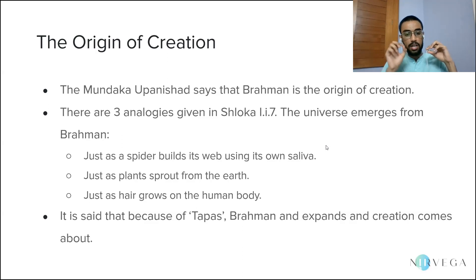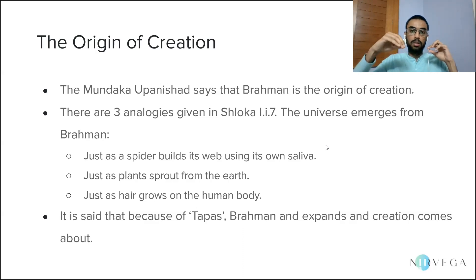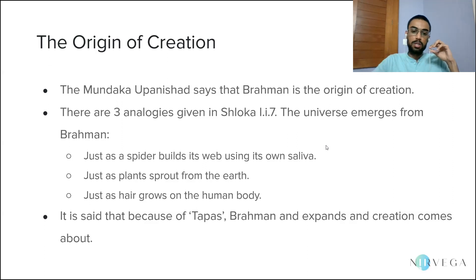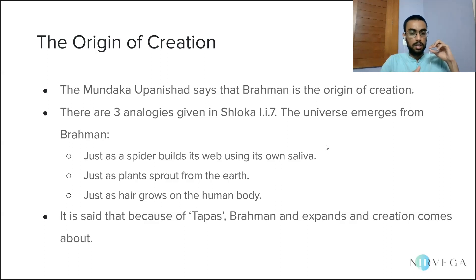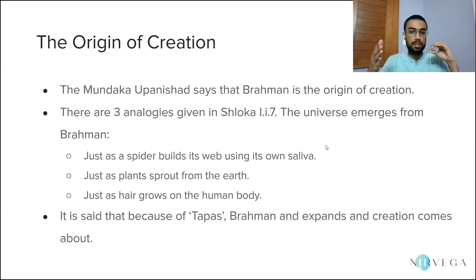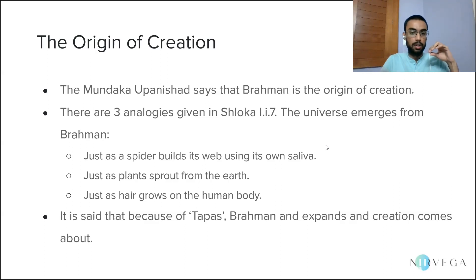The second analogy says: just as plants sprout from the earth. This is meant to drive home the fact that the effect does not have any existence apart from the cause. Just as if you uproot a plant it dies, similarly the universe, if you try to separate it from Brahman, has no existence — it owes its existence to Brahman, just as plants owe their existence to the earth.